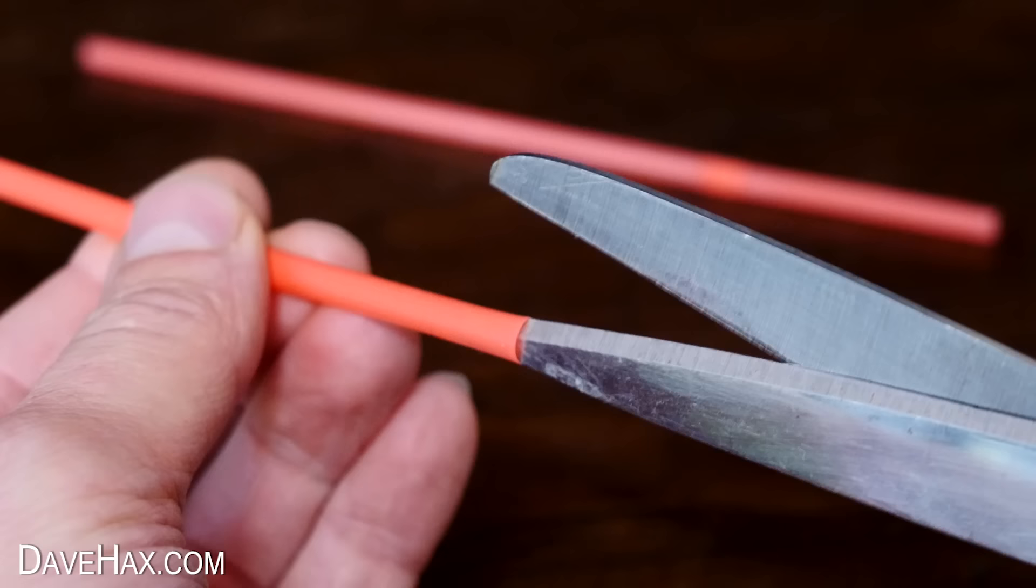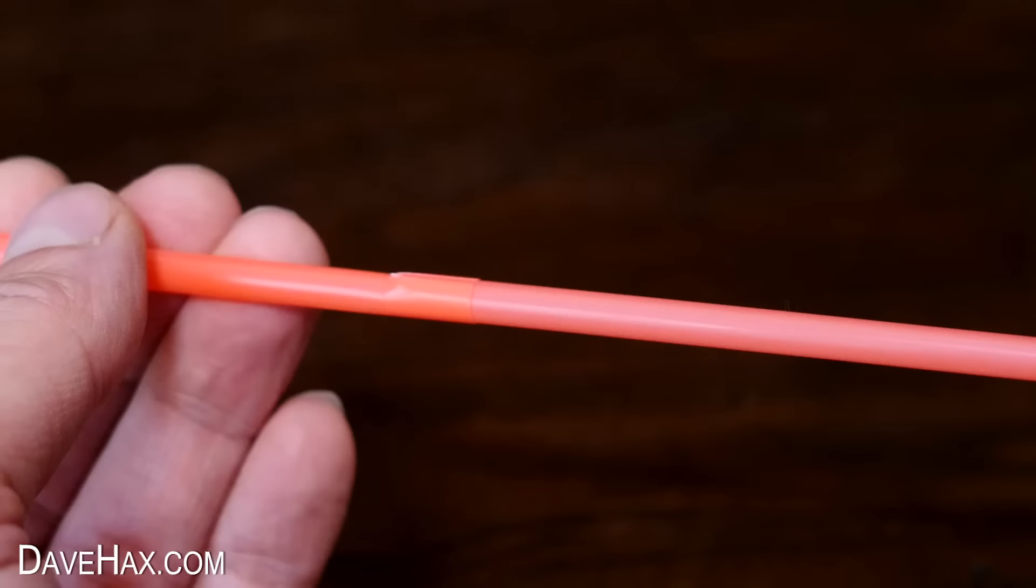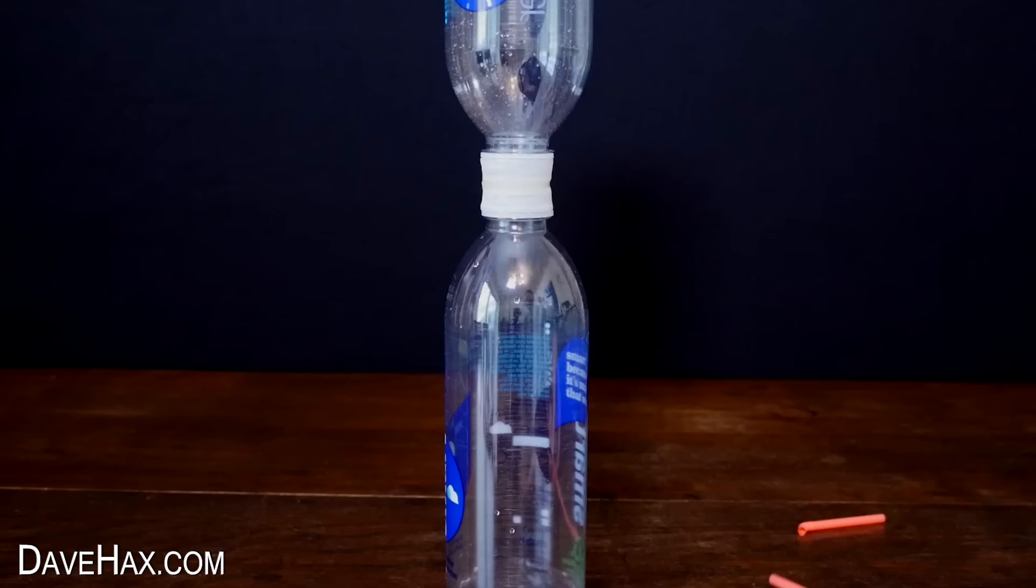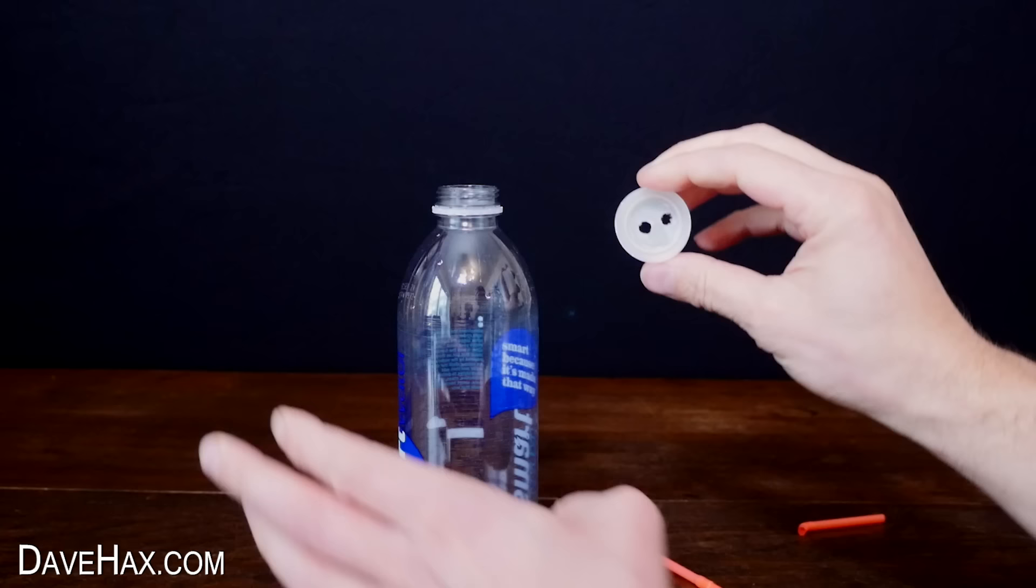So I'm going to lengthen a standard drinking straw by putting a slice in the end, sliding another straw inside and sealing them together with my glue gun. I chopped off the flexi bit on one end and it should now be long enough for the next step.